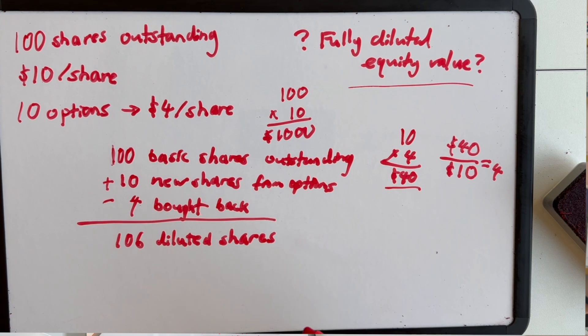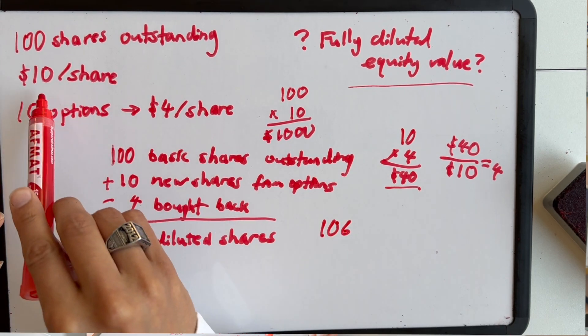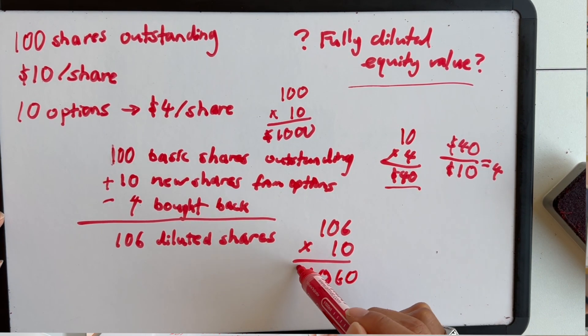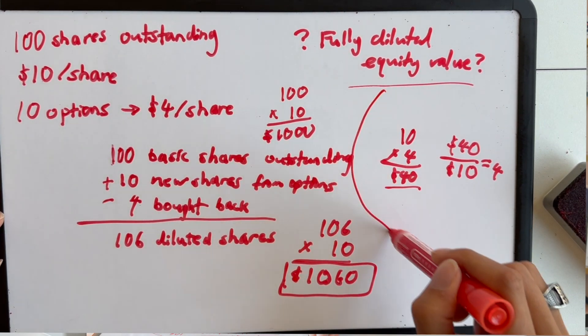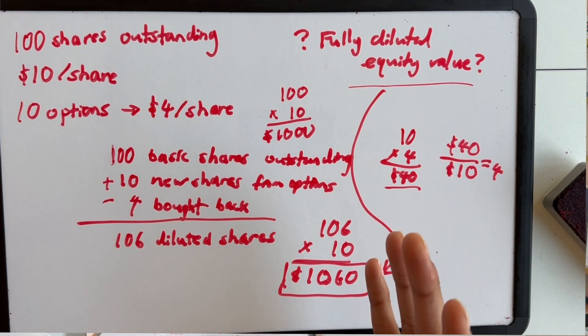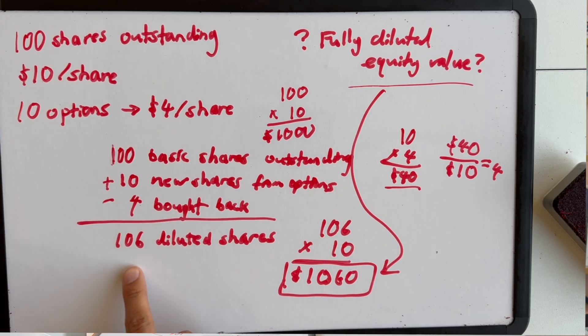The question we started with was: what's the fully diluted equity value of the company? If we take the 106 diluted shares and multiply by the current market price of $10 per share, we get $1,060 as the fully diluted equity value of the corporation. Effectively, you start with the basic amount of shares outstanding, account for the options in terms of how many new shares are created by the in-the-money options, calculate how much money the company receives from the transaction, determine how many shares can be bought back at the current market value, and multiplying the resulting diluted shares by the market price gives you the fully diluted equity value.